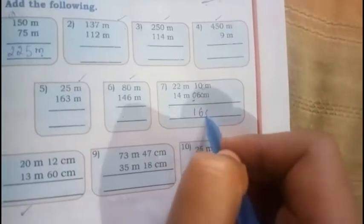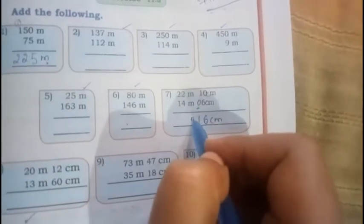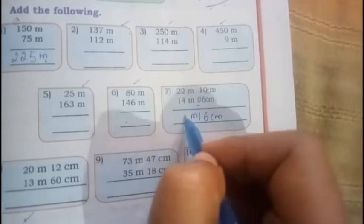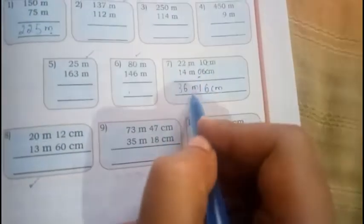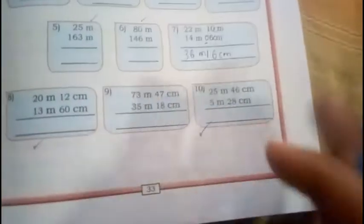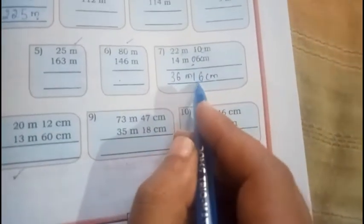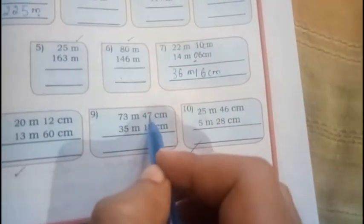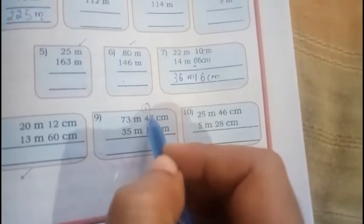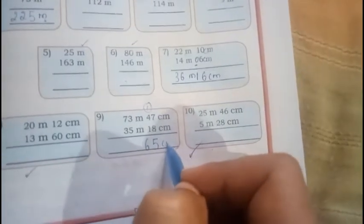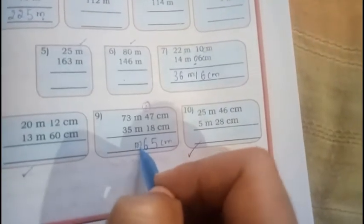M over here. 2 plus 4 is 6, 2 plus 1 is 3. So 36 meters or 16 centimeters. This question, same like this only. 8 plus 7, how much? 15, right? 1 carry. 4 plus 1, 5. 5 plus 1, 6. This is centimeters. You need to write meters below.